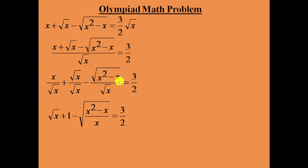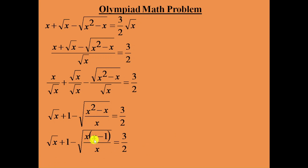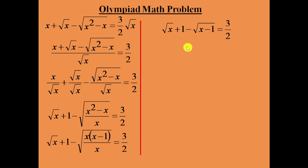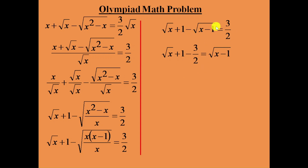So we have: square root of (x² − x) divided by x equals 3/2. From x² − x, take x as common — the remaining is x − 1 — and cancel this x in the numerator and denominator. The remaining value is square root of (x − 1) equal to 3/2. Now bring 3/2 from the right side to the left side, making it minus 3/2, and send minus square root of x − 1 to the right side.